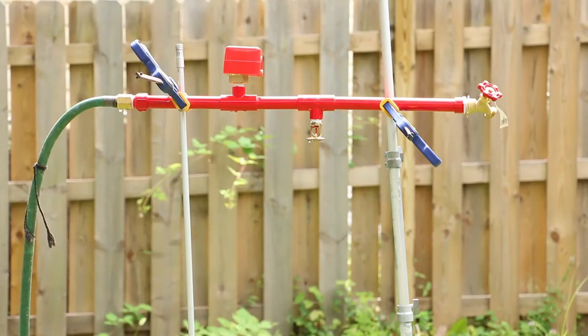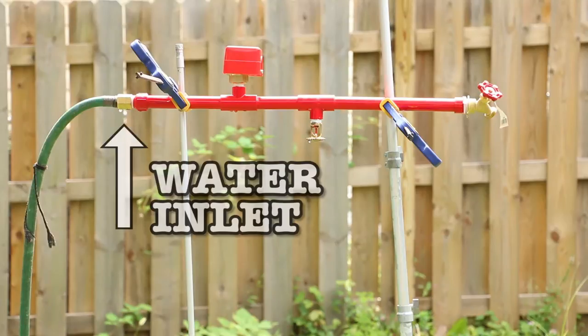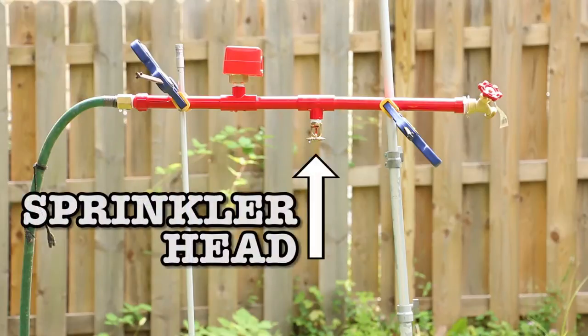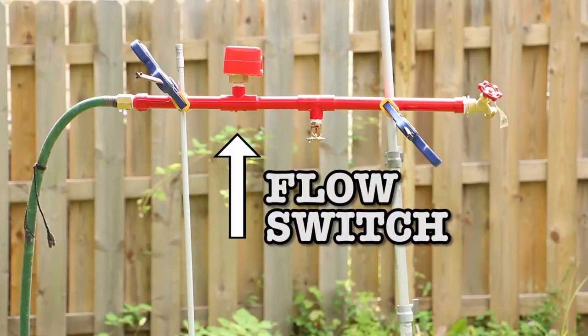To find out, we built a miniature version of a real sprinkler system. There's a connection to the water supply, in this case a garden hose, a sprinkler head, a flush valve, and a flow switch.